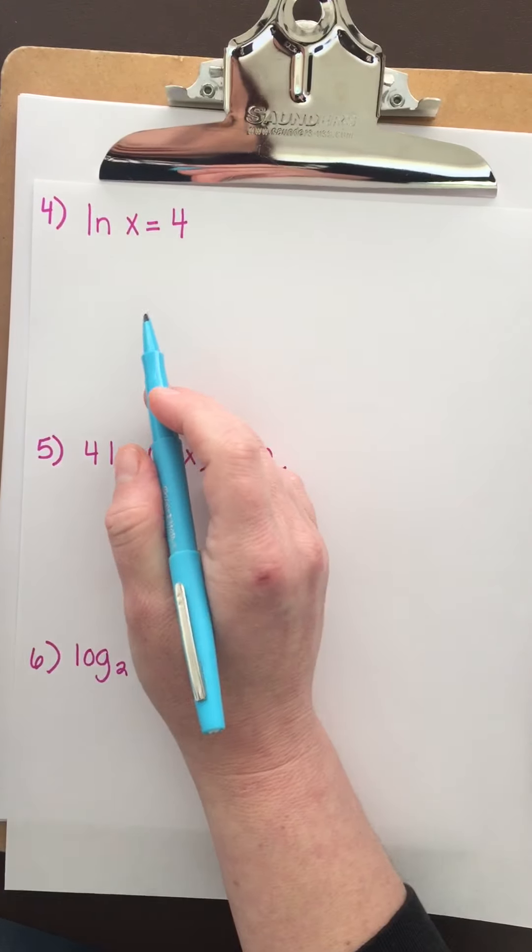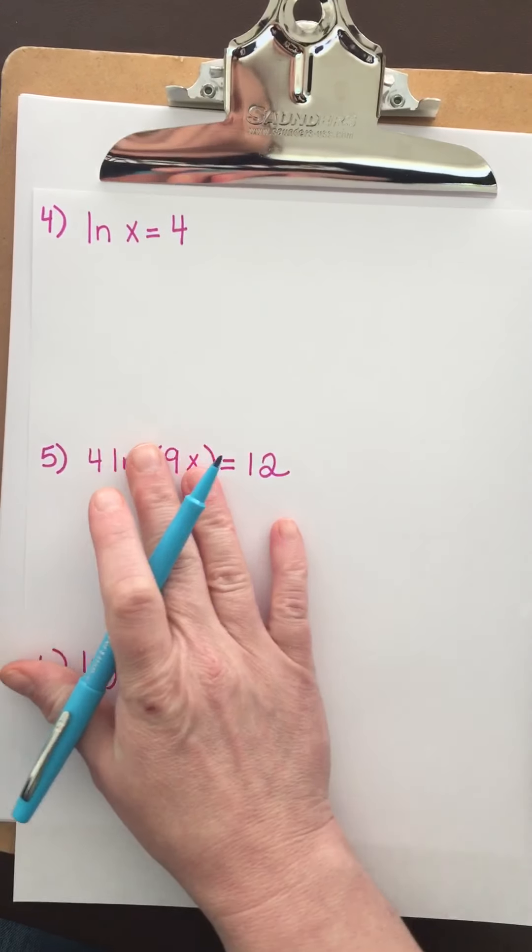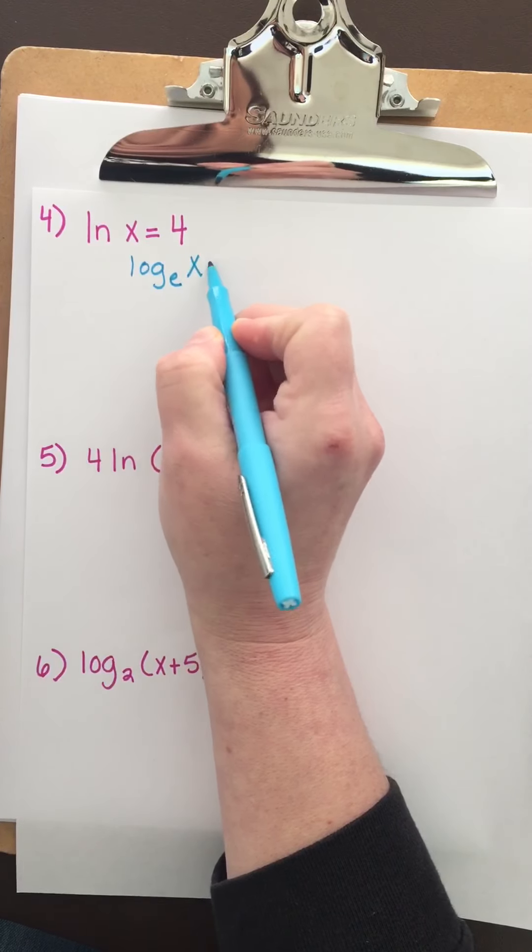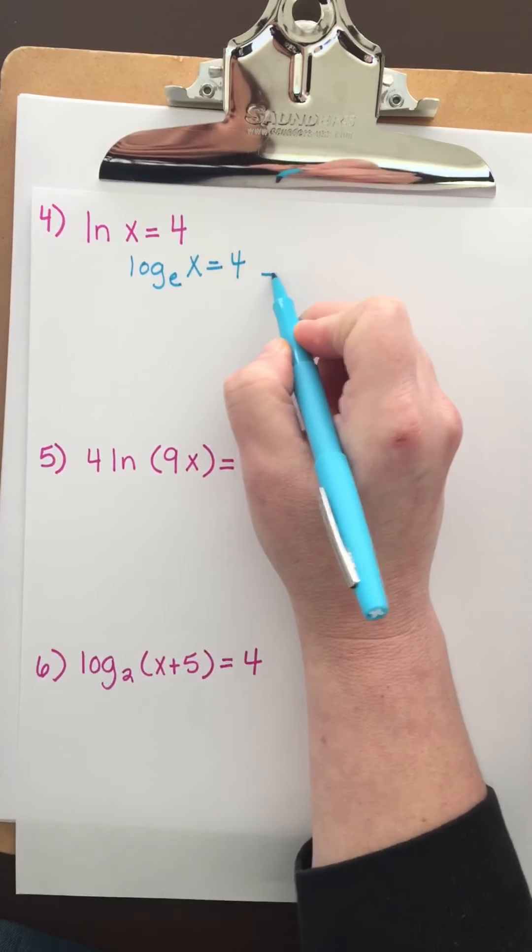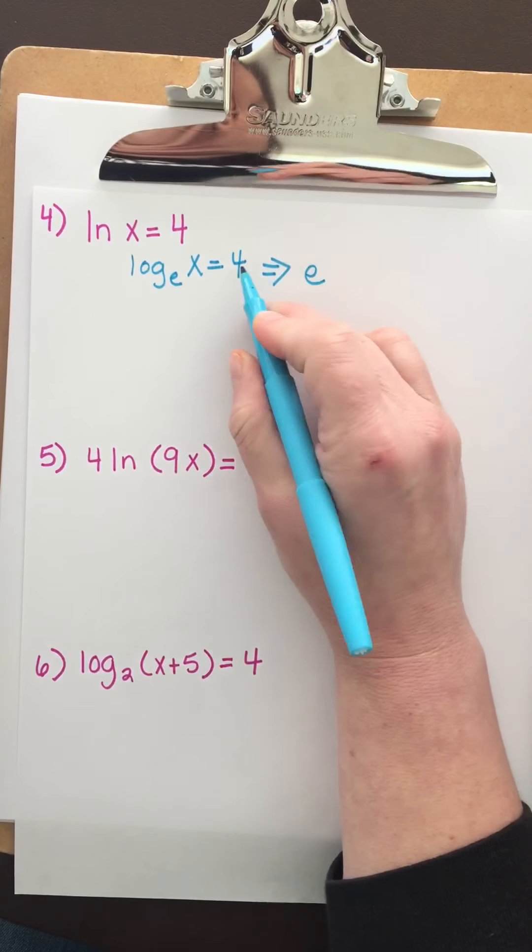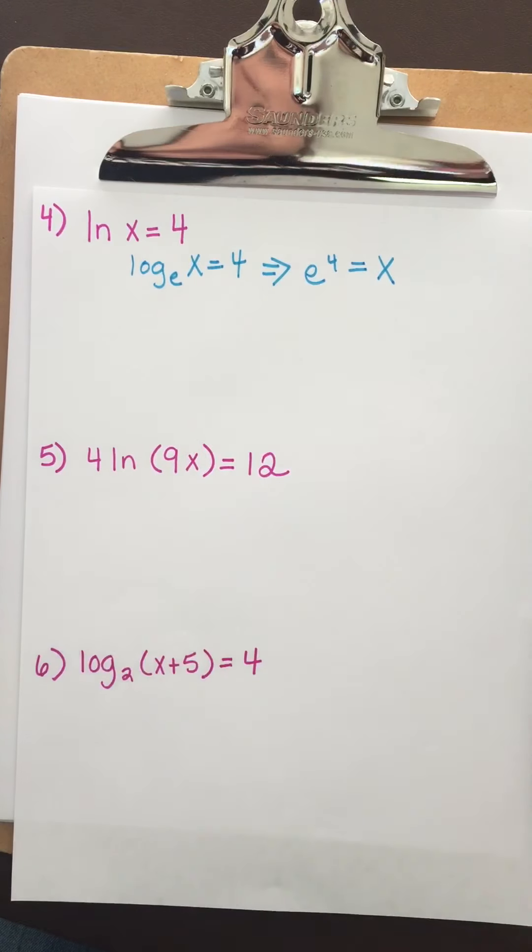We have the natural log of x equals 4. Remember, the natural log is just a log with base e. Rewriting and changing to exponential form, we get e to the 4th equals x. We're done.